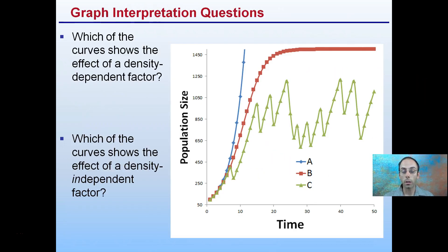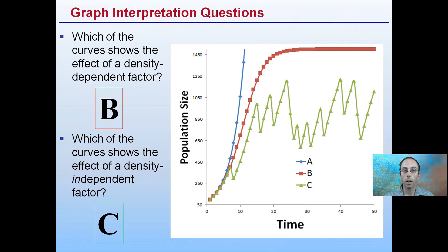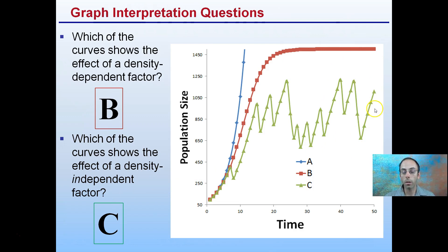The answers here — you're welcome to pause the video and take a guess yourself. Density-dependent would be line B, because we are limiting our population growth. Density-independent factors could be like storms, floods, and droughts, so you can see a lot more variability that occurs and influences population density.